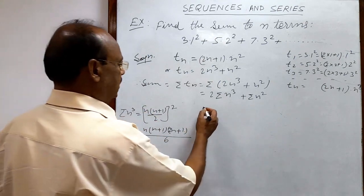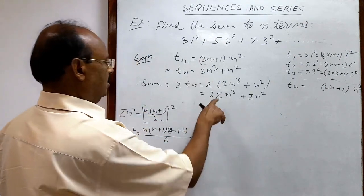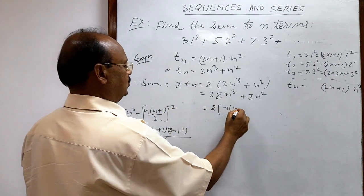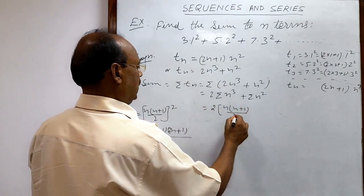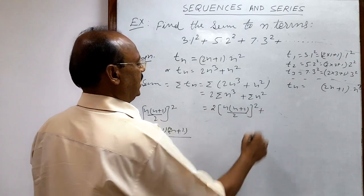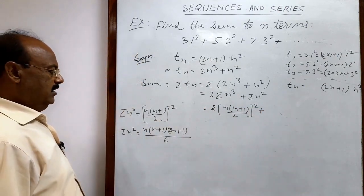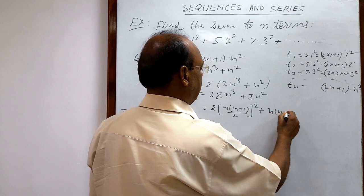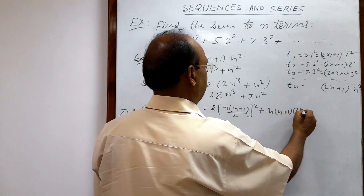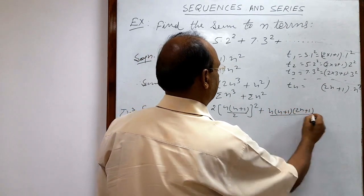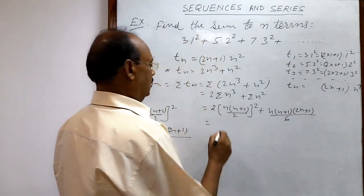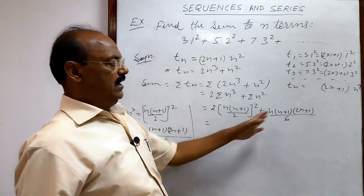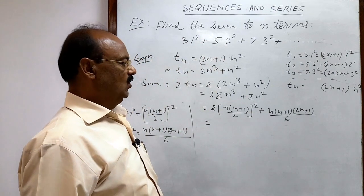Substituting the formulas: 2 into sigma n cubed becomes 2 into n into n plus 1 by 2, whole square; and sigma n square becomes n into n plus 1 into 2n plus 1, divided by 6. After substituting, we now need to simplify this expression to get the final result.